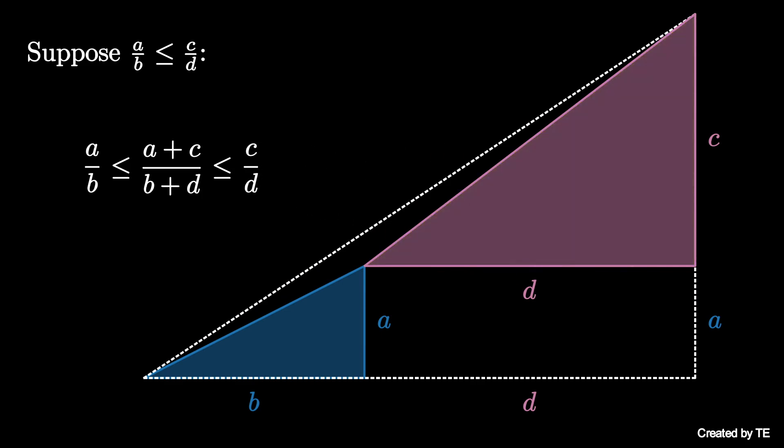The middle quantity A plus C over B plus D is known as the median of the two fractions A over B and C over D. Therefore, this is known as the median inequality.